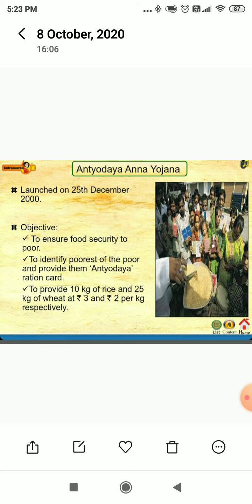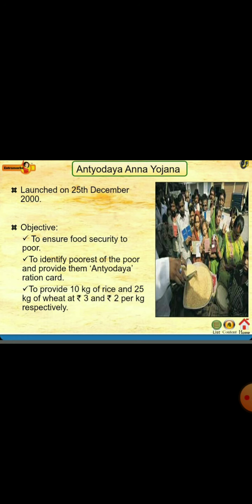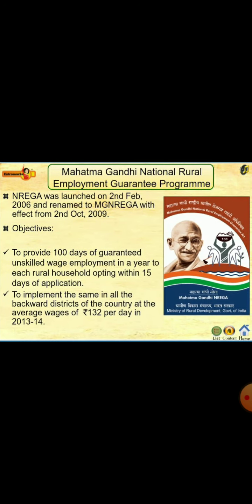This scheme was launched in the year 2000 on 25th December. Its main objective is to ensure food security to the poor, to identify the poorest of the poor and provide them an Antyodaya ration card — which is red in color — and to provide 10 kg of rice and 25 kg of wheat at the rate of Rs. 3 per kg and Rs. 2 per kg respectively.